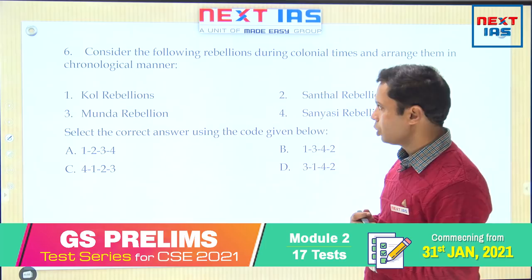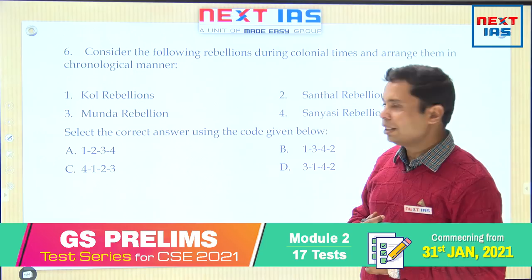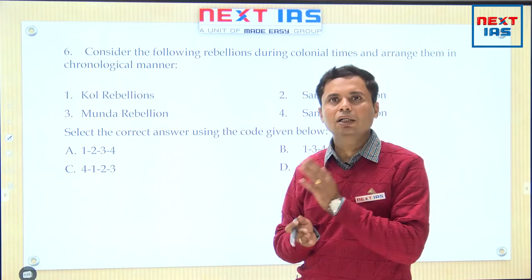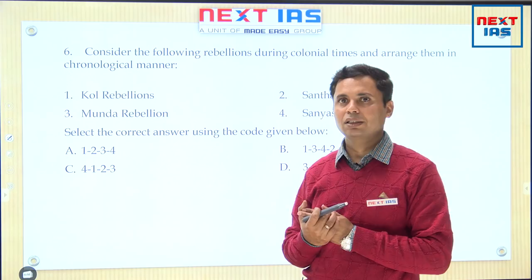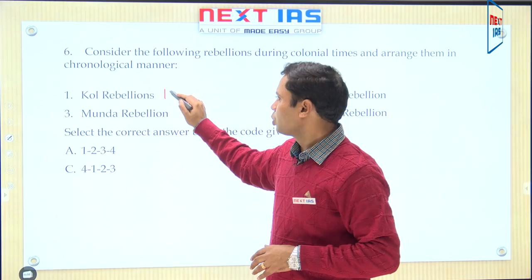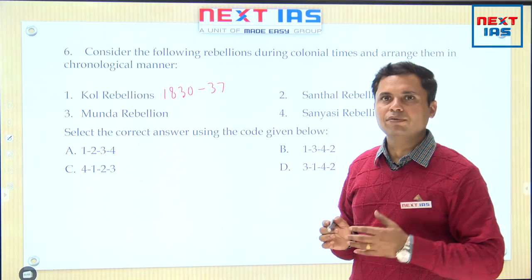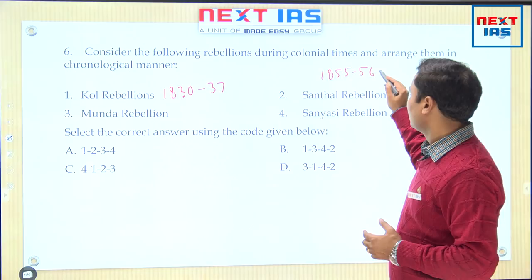Moving to question number 6: consider the following rebellions during colonial times and arrange them in chronological order. In the hundred years of British rule from 1757 to 1857, there had been hundreds of revolts by tribals, peasants, and different groups like sadhus and sanyasis. The Kol Rebellion, covering present-day Jharkhand area, took place in 1830–37. The Santhal Rebellion was one of the most famous revolts in the pre-1857 phase, in 1855–56, led by two famous brothers Siddhu and Kanhu.